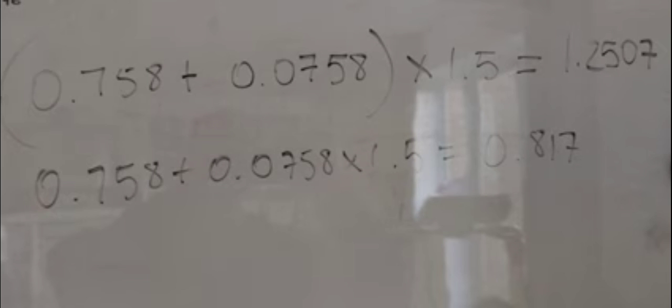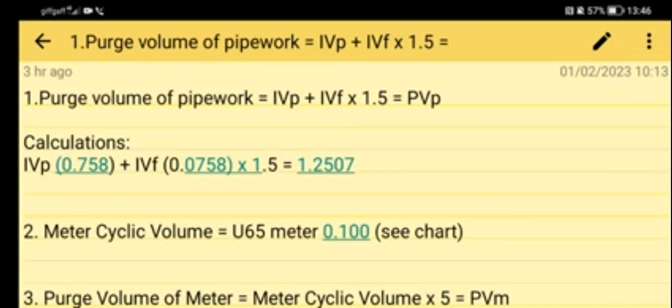I did ask someone to verify the results and they said it looked all correct, but what they didn't realize is that I made a mistake when working out the cyclic volume. In stage two, I actually got the meter volume rather than the cyclic volume. Be careful not to do that. Make sure that you work out the cyclic volume. The meter volume is there for when you're doing a tightness test, but when you're doing a purge you need the cyclic volume chart.